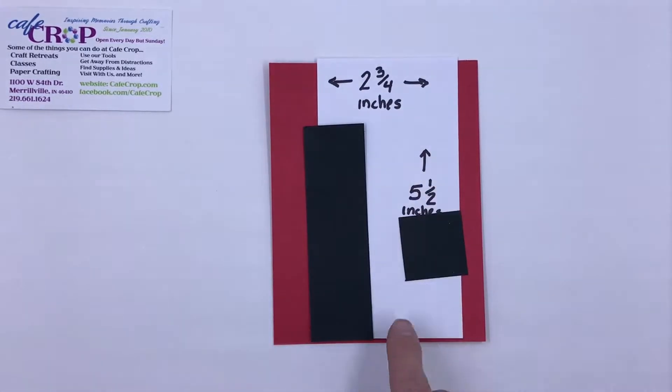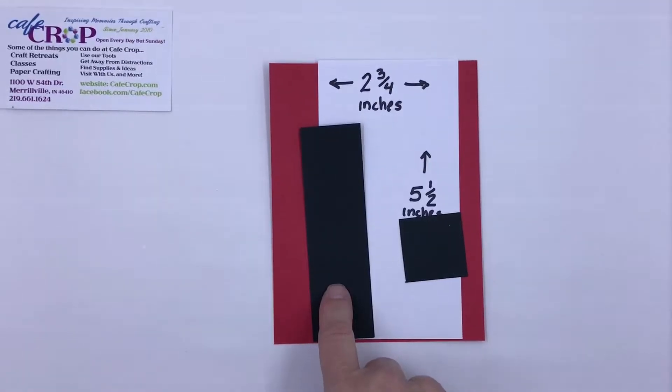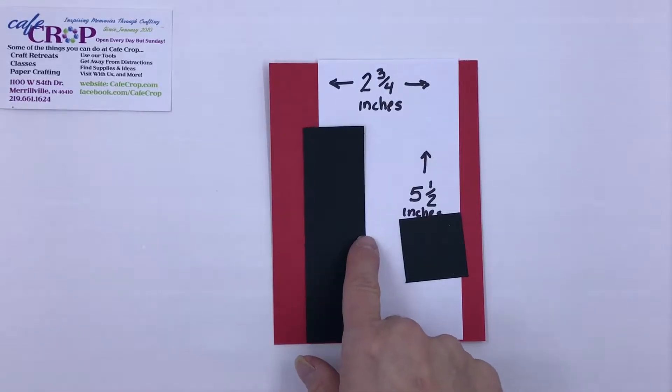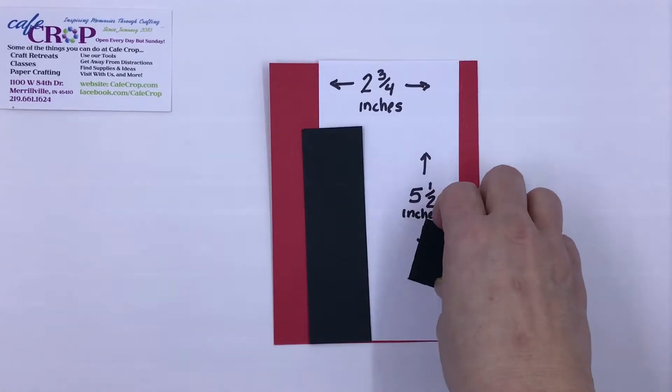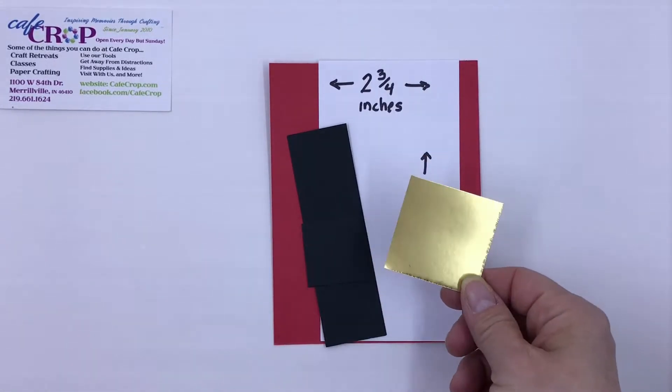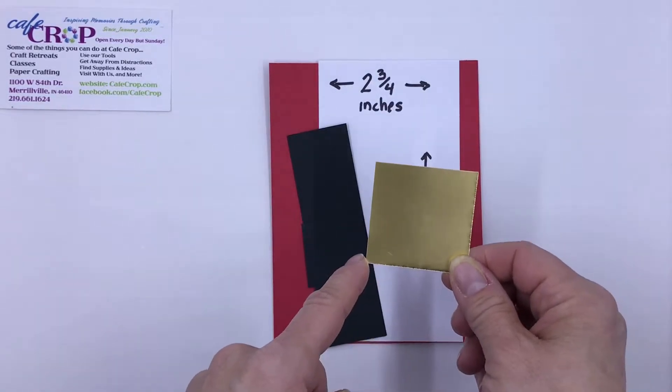And then we need two pieces of black. The square is going to be one and a quarter by one and a quarter, and the longer piece is one and a quarter by four and a quarter. And then we need one last piece, a piece of gold cardstock that's going to be one and three-quarter inch square, so one and three-quarter by one and three-quarter.